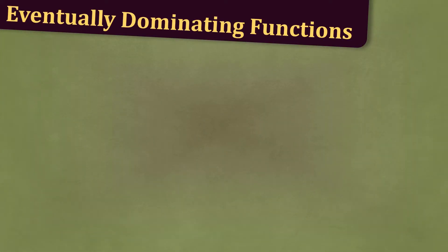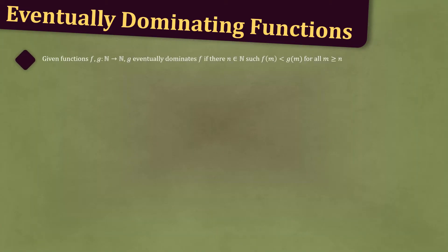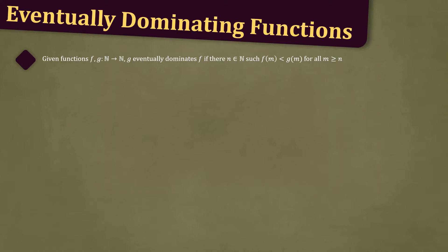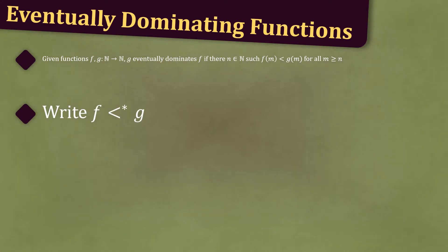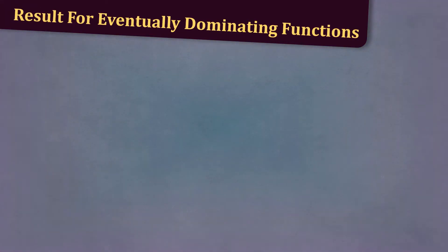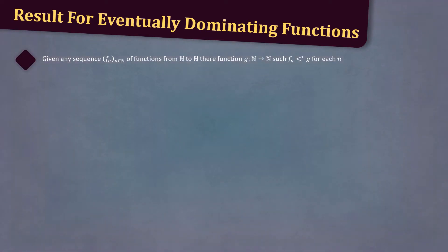Let's define eventually dominating functions. Given functions f and g from the natural numbers to the natural numbers, we say that g eventually dominates f if there is some n in the natural numbers such that f of m is less than g of m for all m greater than or equal to n, written f <* g. Given any sequence f_n of functions from the natural numbers to the natural numbers, there is a function g from the natural numbers to the natural numbers such that f_n <* g for each n.